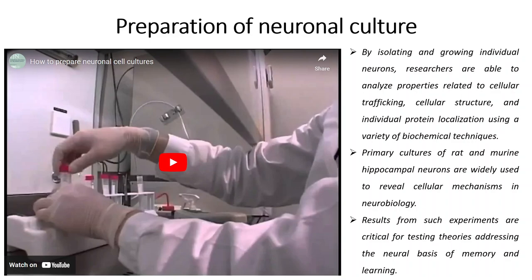We will be discussing the neuronal culture and how it is done. Neuronal culture refers to the primary culture of rat hippocampal neurons which are obtained from prenatal or embryonic rats. We will watch a video to understand how this process is done, and I will provide you with the link when I upload it to YouTube. These videos very nicely show how the preparation of neuronal culture is done, and I will also provide you with the entire protocol in the upcoming slides.